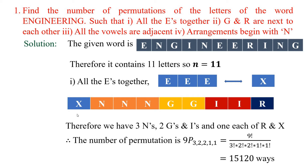We are left with 9 letters. So it can be written as 9P(3, 2, 2, 1, 1), where 3, 2, 2, 1, 1 represent three N's, two G's, two I's, and one each of R and X. This is equivalent to 9! / (3! × 2! × 2! × 1!). Simplifying using your calculator, you get the number of permutation arrangements as 15,120 ways. This is how we calculate problem 1.